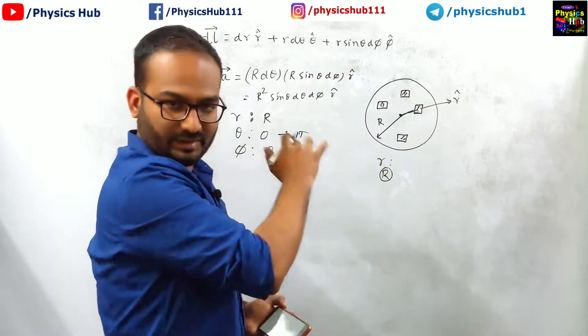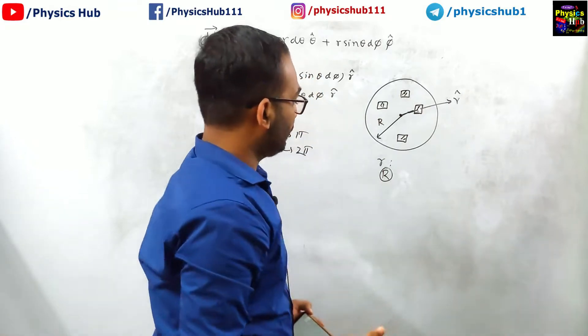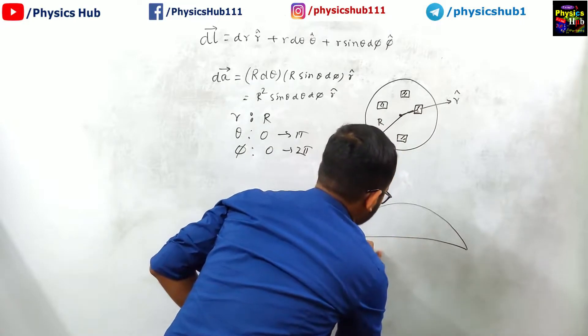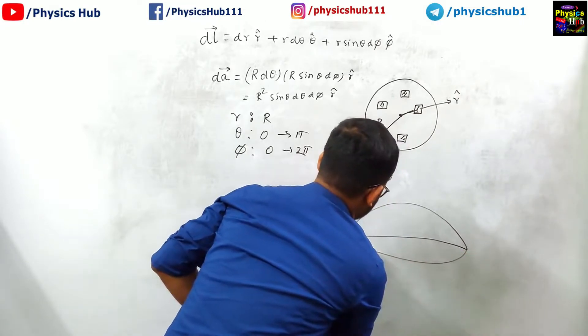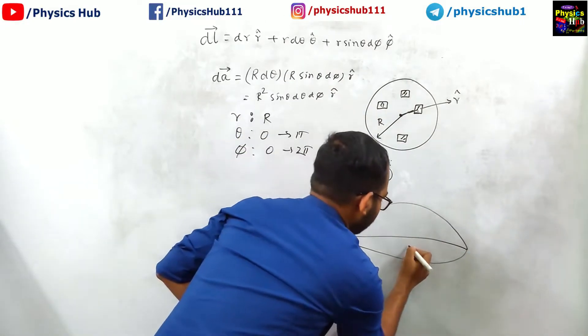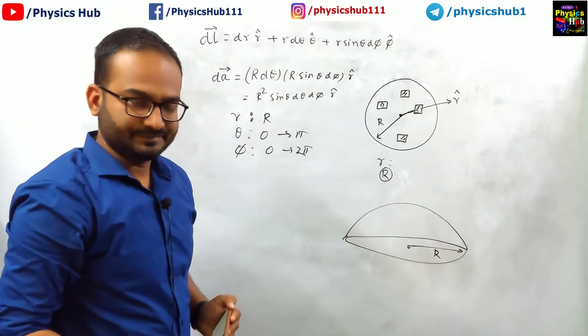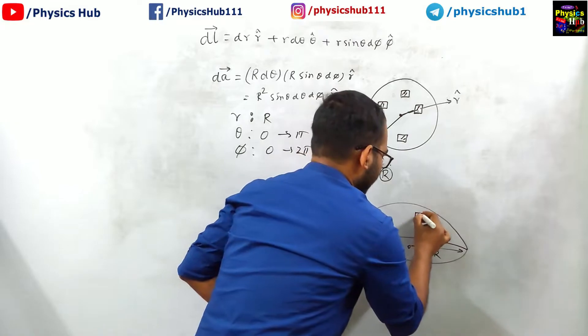Now this one everybody knows. Let us talk about another surface. I am giving you a semi spherical surface like this. What about this? It has again this radius r. What about this surface?